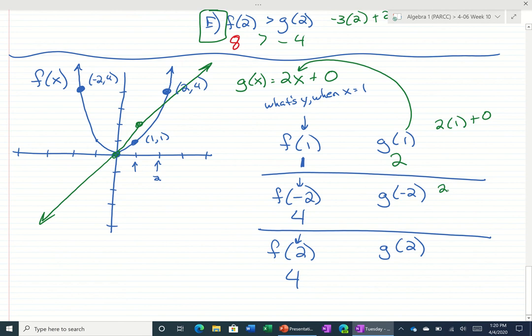For this one, if we plug in negative 2, 2 times negative 2 is negative 4. If we plug in positive 2, 2 times 2 is 4, plus 0 is 4.